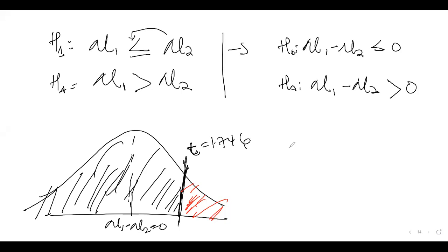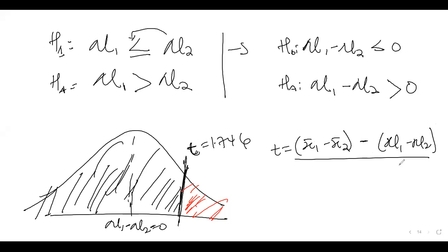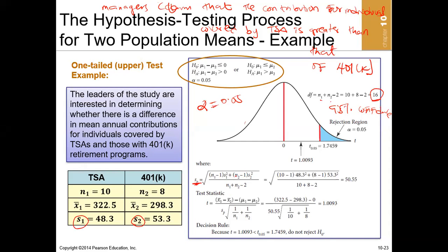Now we have to compute our own t to compare with the critical value. The formula is: mean1 minus mean2, minus the population mean difference (u1 minus u2), all over the pooled standard deviation times the square root of 1 over n1 plus 1 over n2. We need to find the pooled standard deviation using the long formula, fixing the sample standard deviations squared for each group.